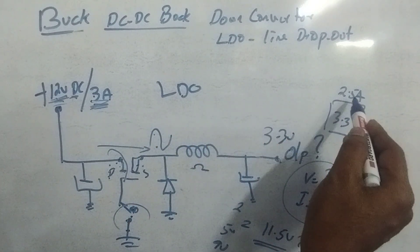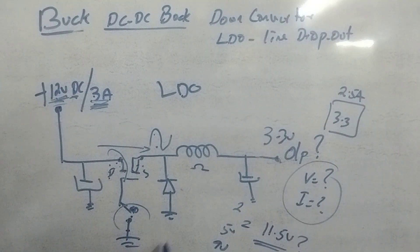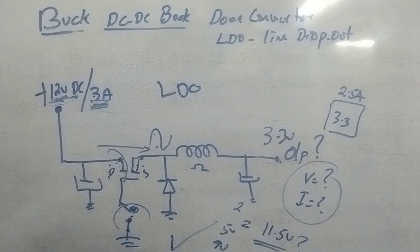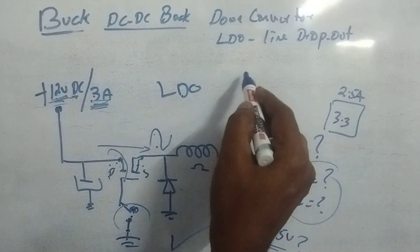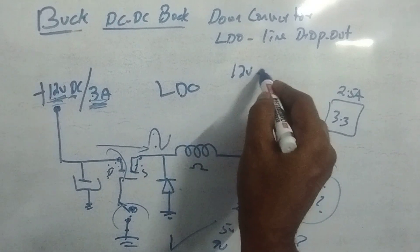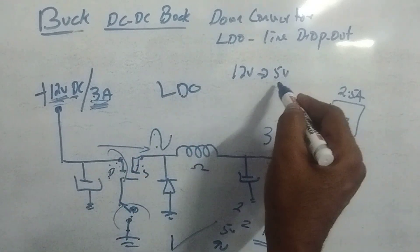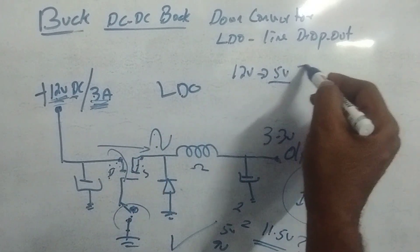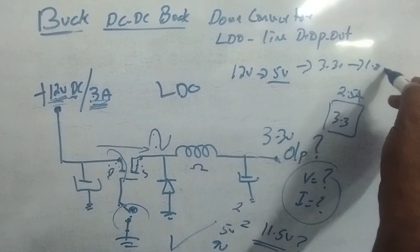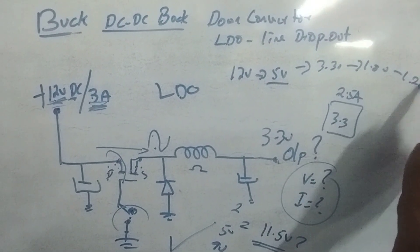So that is why we using LDO. All brands - Sony, LG, Samsung motherboard, our normal combo board also we are using LDO. LDO first 12 volt generate, then 5 volt LDO, then 5 volt LDO then 3.3 volt LDO, then 1.8 volt LDO, then 1.2 volt.